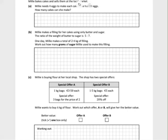On to question 2 now. Millie bakes cakes and sells them in the local market. She has 28 eggs overall and she needs 4 eggs to make each cake. How many cakes can she make?